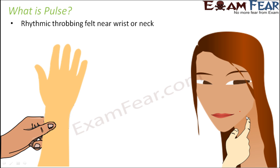That rhythmic throbbing you can feel is called pulse. It occurs because blood flows through arteries under very high pressure. The arteries, having elastic walls, contract and relax as blood moves through them. This contraction and relaxation is felt as a rhythmic vibration — that is the pulse.